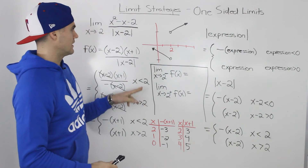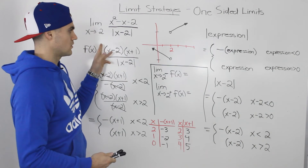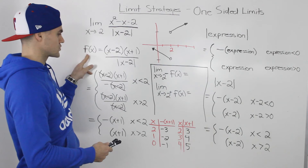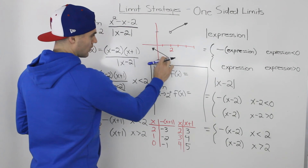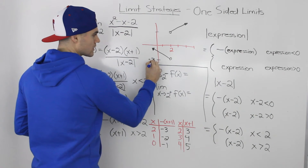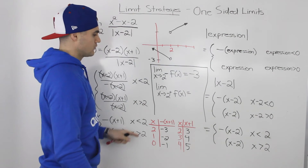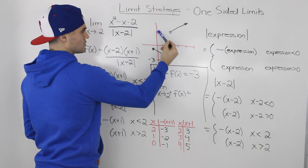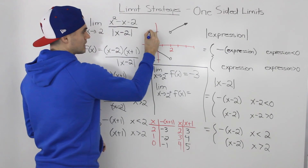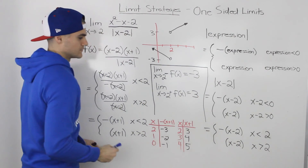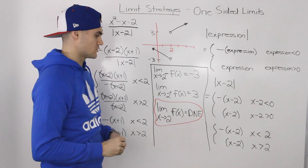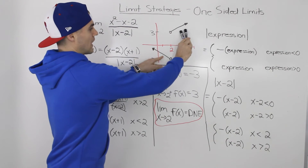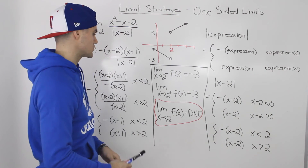Now let's find the one-sided limits approaching x equals two. Approaching from the left, the function approaches a y value of negative three, so that limit equals negative three. Approaching from the right, the function approaches a y value of positive three. Because we're approaching different y values from both sides, the limit as x approaches two does not exist — and this is clear from the graph.